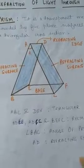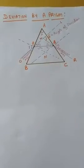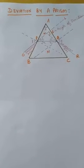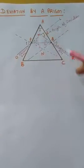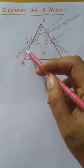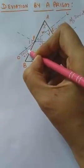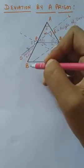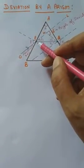Now we will discuss how refraction takes place through a prism — that means when a ray of light strikes on the surface of the prism, how it enters and comes out. I have already drawn the ray diagram. This is the principal section ABC. When a ray of light, the incident ray, strikes on the first face AB of the prism...